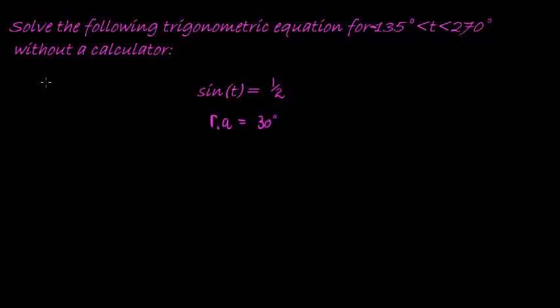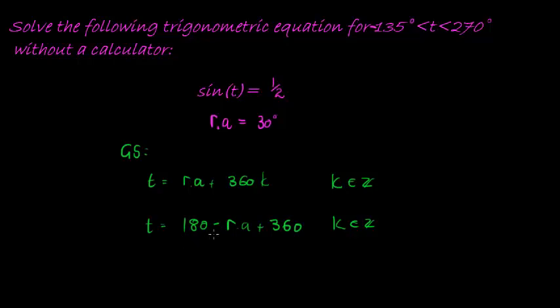So now we can go ahead and write down our general solution, which is that t is equal to my reference angle plus 360 times k, where k is going to be some integer, or t is equal to 180 degrees minus the reference angle plus 360 degrees times k. And this second one, again we find because in the second quadrant it's 180 minus, is where sine is positive.